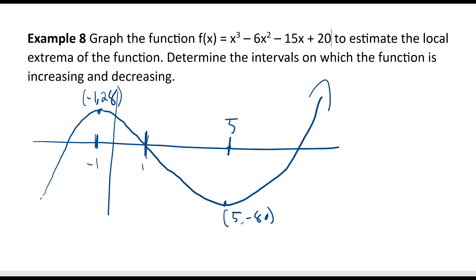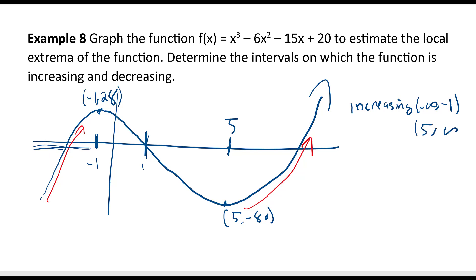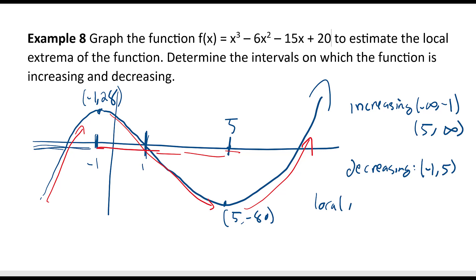Looking at the x-values, the function is increasing from negative infinity up to negative 1. Then it is decreasing from negative 1 to 5. Then it increases again from 5 to infinity. The local maximum is at (-1, 28) and the local minimum is at (5, -80).